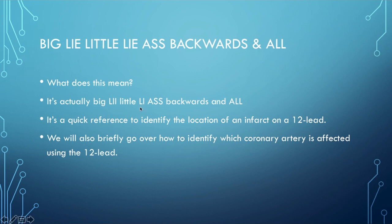L-I-I and L-I — big lie being bigger because it has one more I than the little lie. It's a quick reference to identify the location of an infarct on a 12-lead, and we'll also go over how to identify which coronary artery is affected.